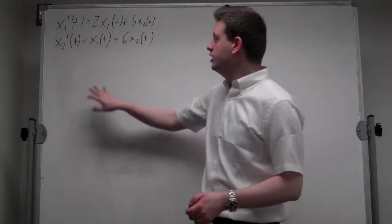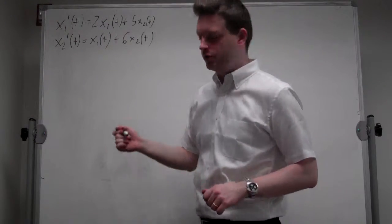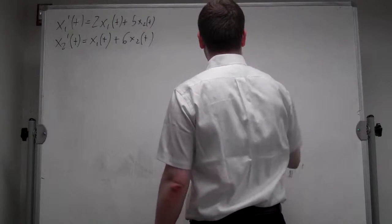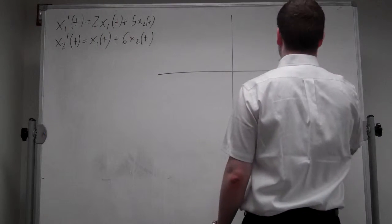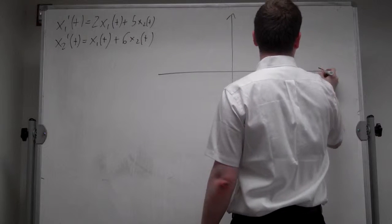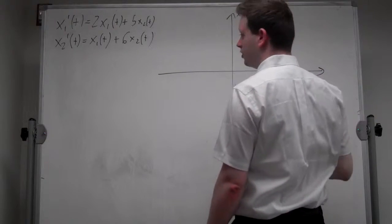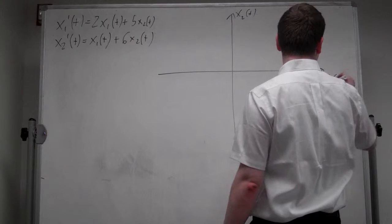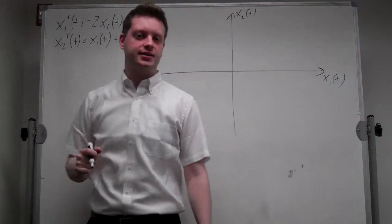So we need these initial equations, and we want to draw them into a so-called phase diagram, where we put x2 t on the vertical axis, and x1 t on the horizontal axis.